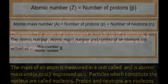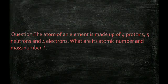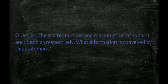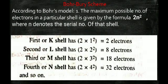For example, if an atom has 4 protons, 5 neutrons, and 4 electrons: the atomic number equals the number of protons = 4; and the mass number equals protons plus neutrons = 4 + 5 = 9.